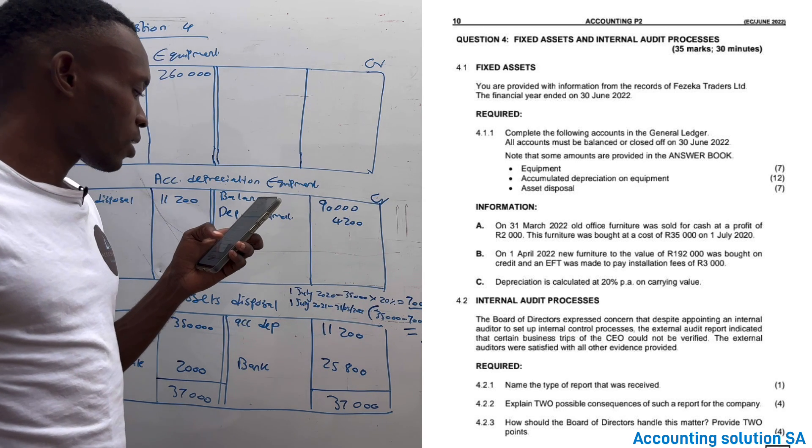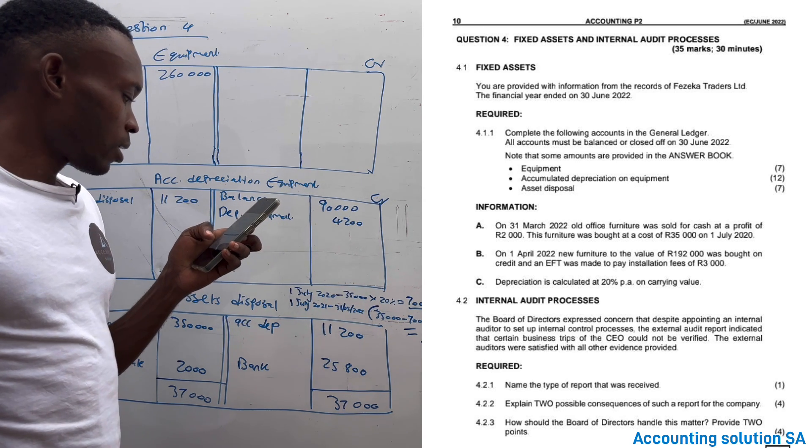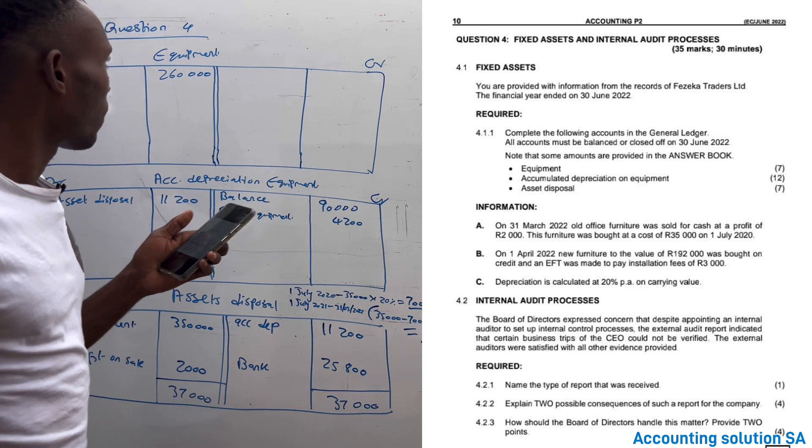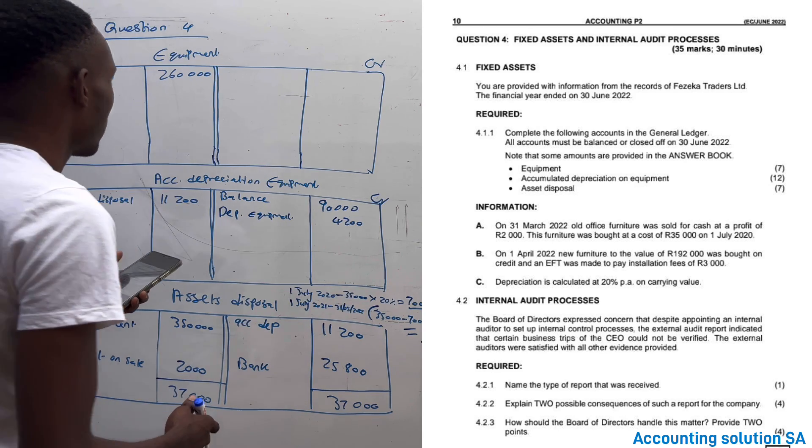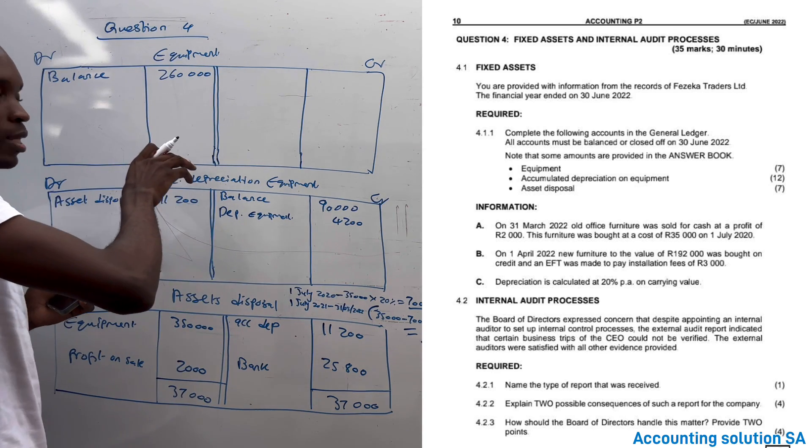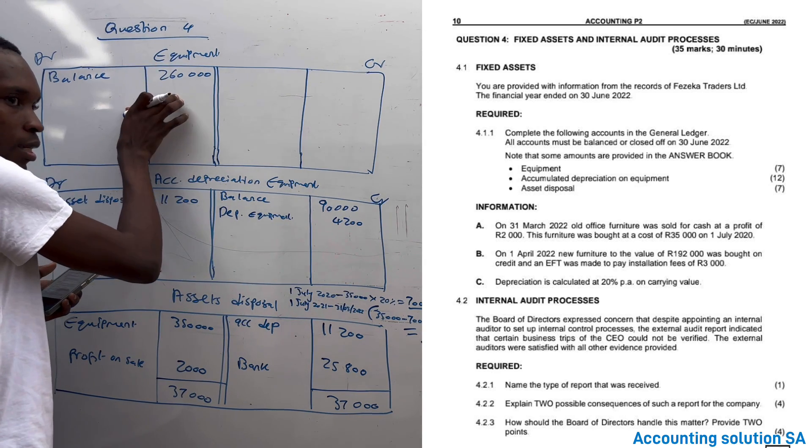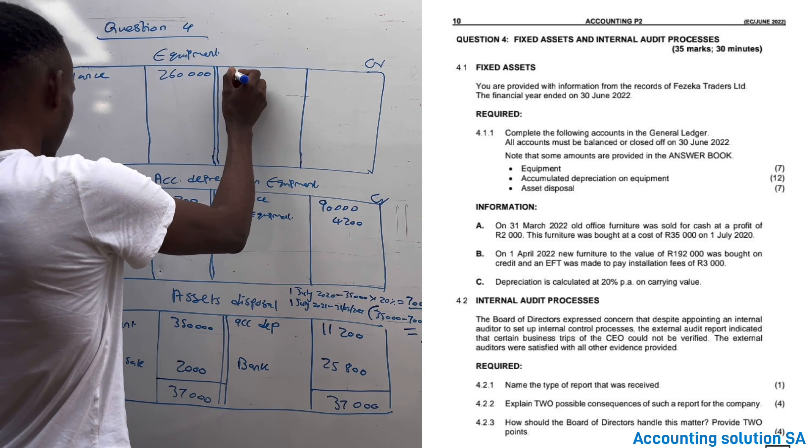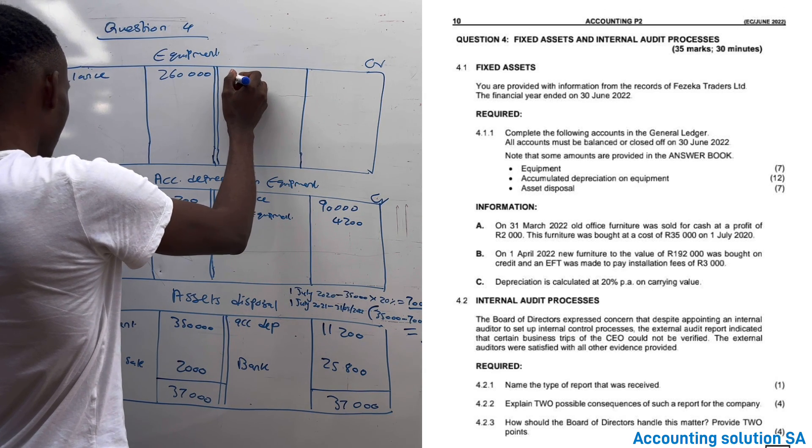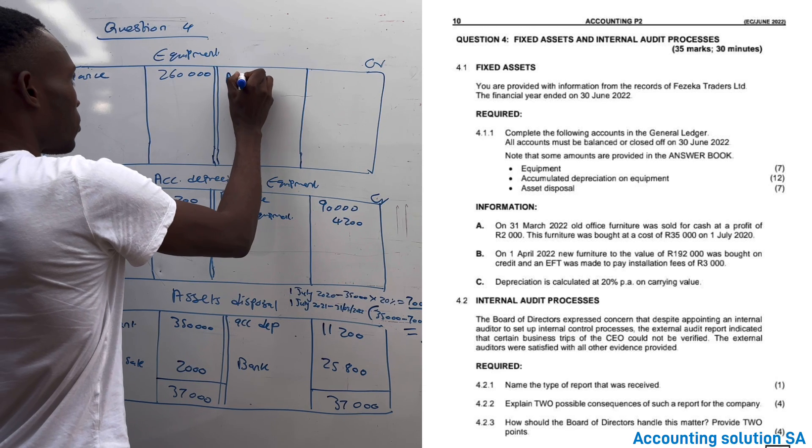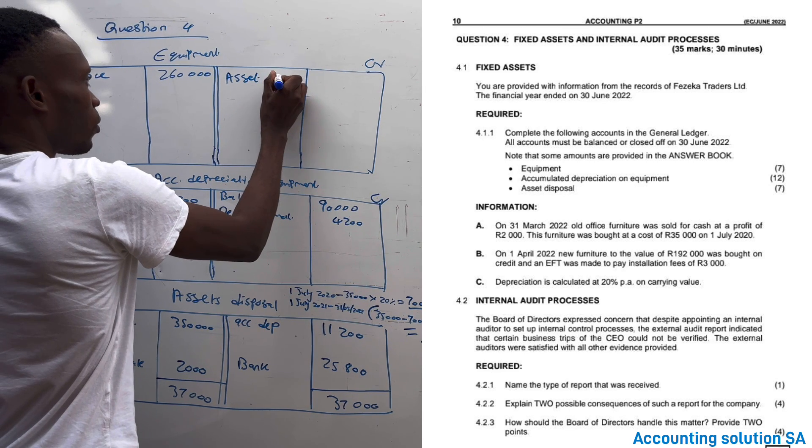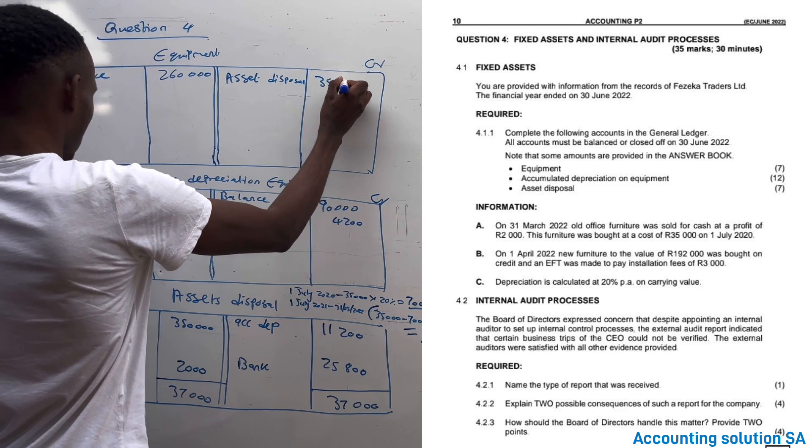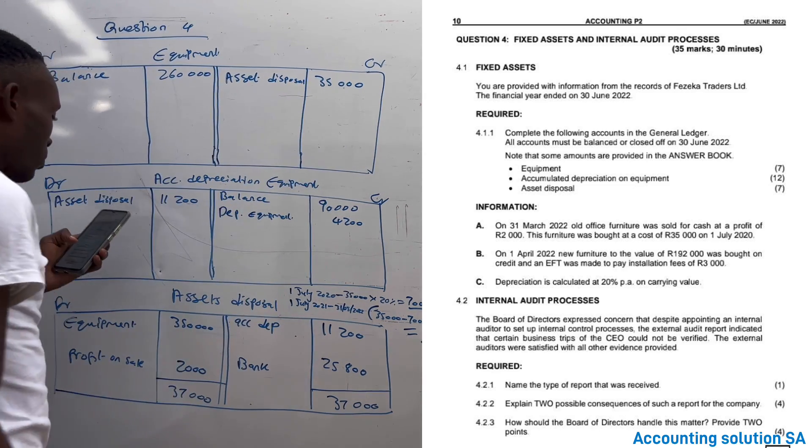Now, moving to the next one. Equipment is an asset. When we buy, debit side. When we sell, credit side. We sell equipment, which means that asset disposal - we record only cost, guys, under equipment account: $35,000.